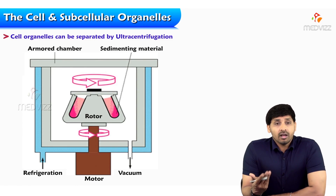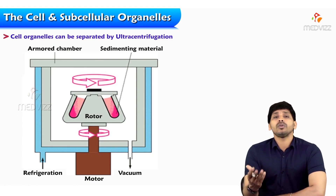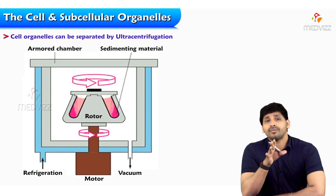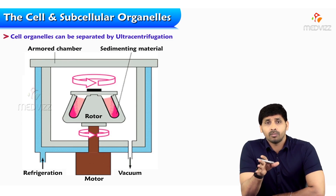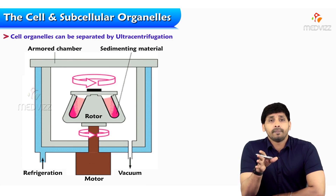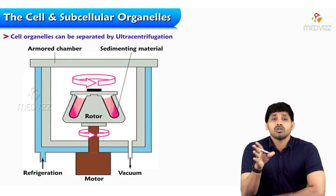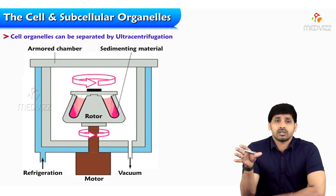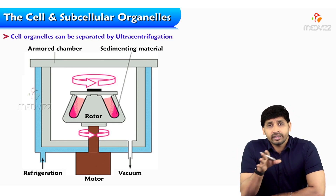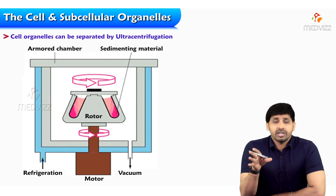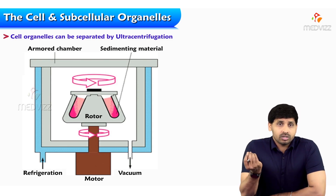Coming to the cell organelles and how they can be separated — how do you isolate the subcellular organelles, especially in the eukaryotic cell? Different subcellular organelles are there: Golgi complex, endoplasmic reticulum, ribosomes, mitochondria, cytoplasm, peroxisomes, lysosomes. The technique used is called ultracentrifugation, which uses centrifugal force.